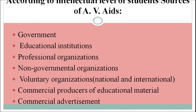According to the intellectual level of students, the sources of audio-visual aids are: government, educational institutions, professional organizations, non-governmental organizations (national and international), commercial producers of educational material, and commercial advertisements.